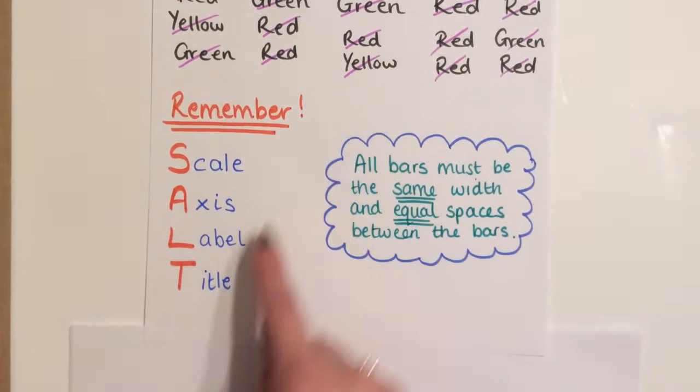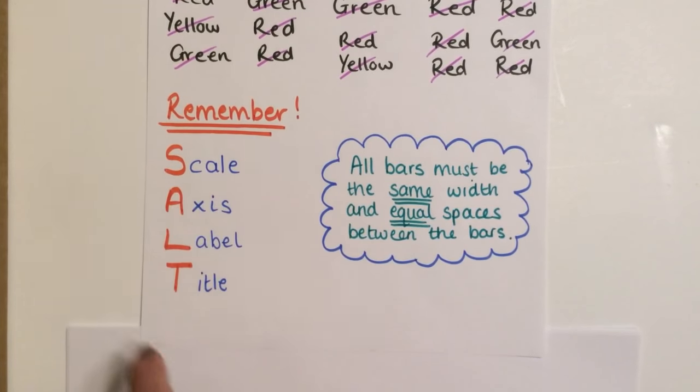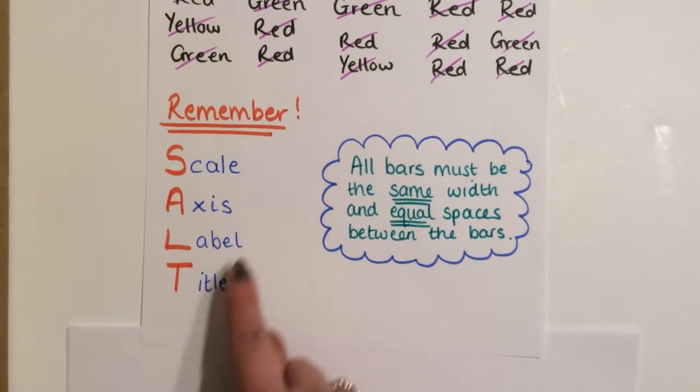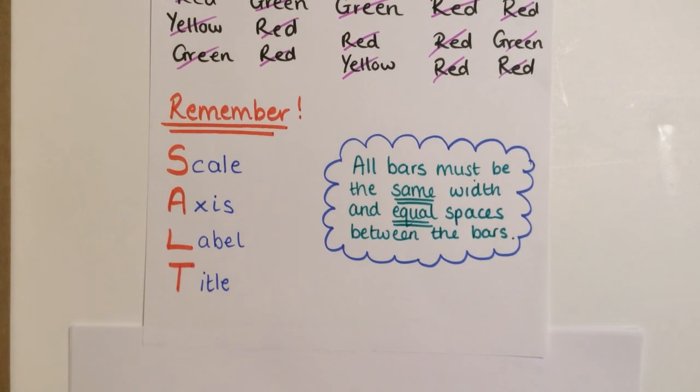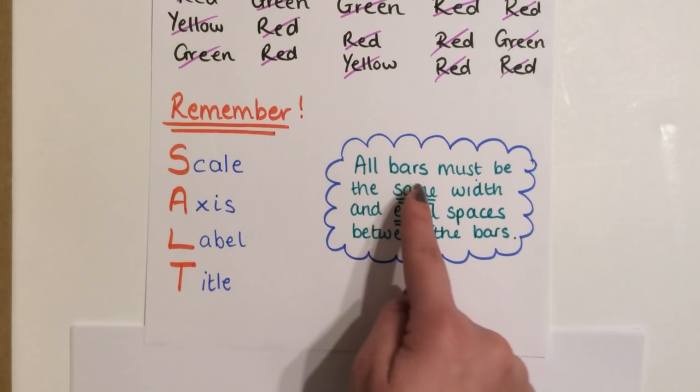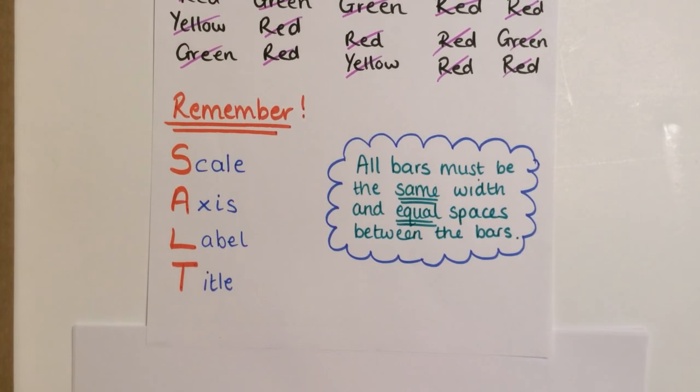When we have bar graphs that we are making we need to remember SALT. We need a scale, we need axes, we need a label and we need titles. Don't forget all bars must be the same width and equal spaces between them.